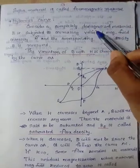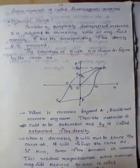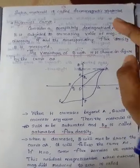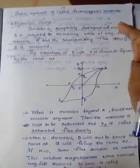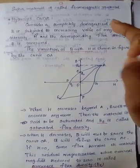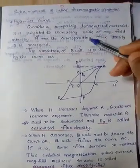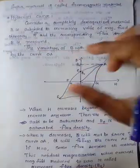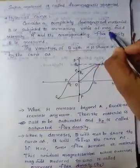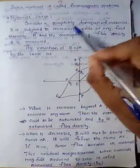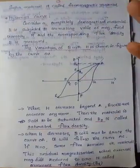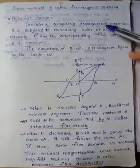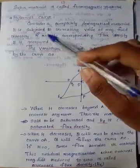We are considering a demagnetized material. We don't know the magnetization of the material. We can apply an external magnetic field. We are applying an external magnetic field to the material. The increasing value of magnetic field intensity H — capital H is the magnetic field. The external magnetic field value is H, that is, the external magnetic field intensity.